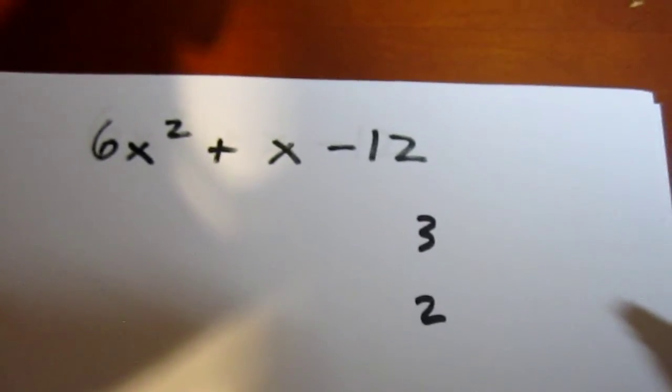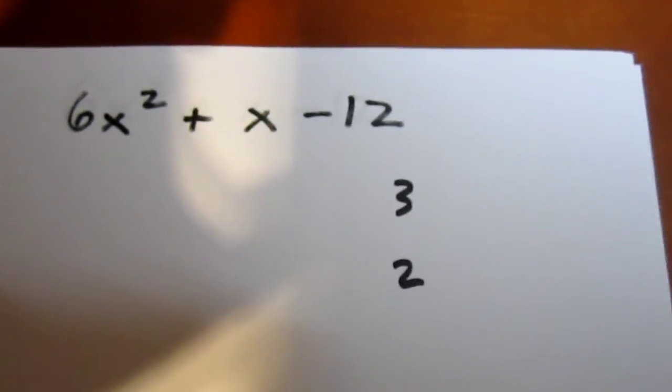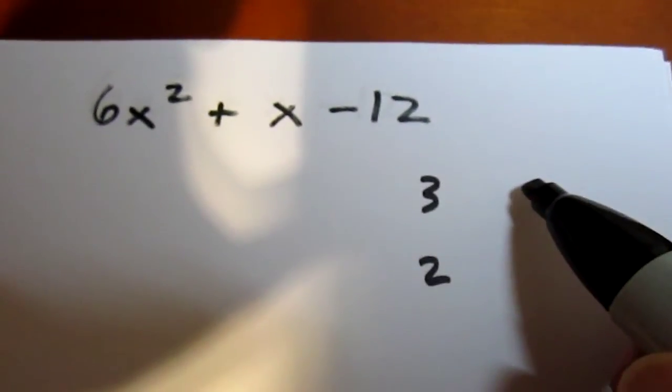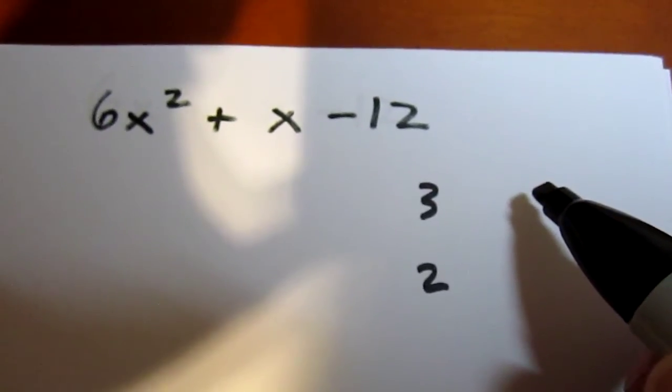or we could use negative 12 and positive 1. I find it usually good to try numbers that are as close together as possible. So maybe we'll try negative 4 and positive 3.